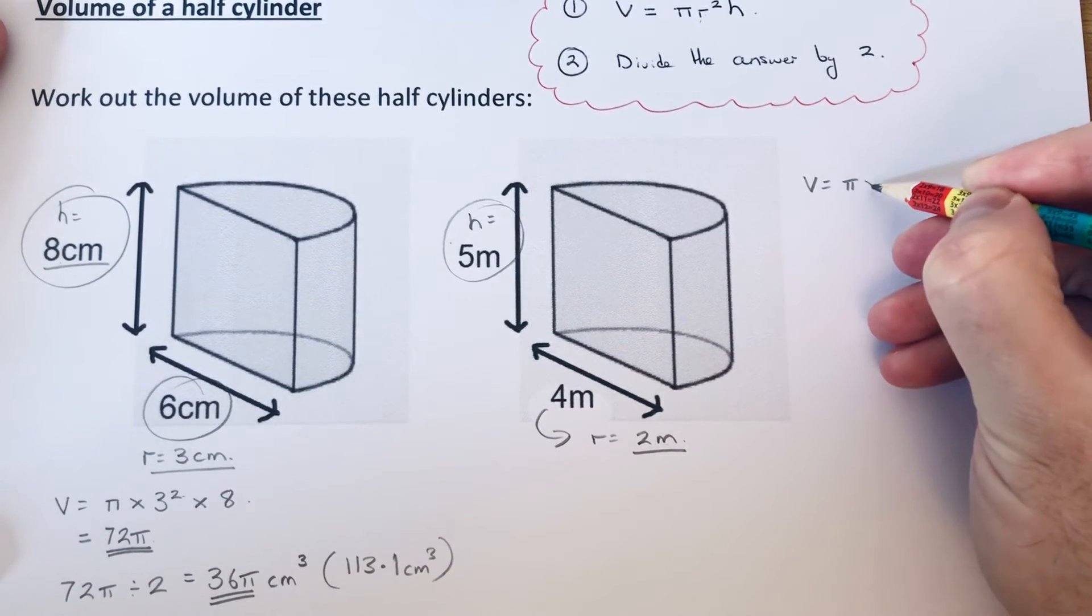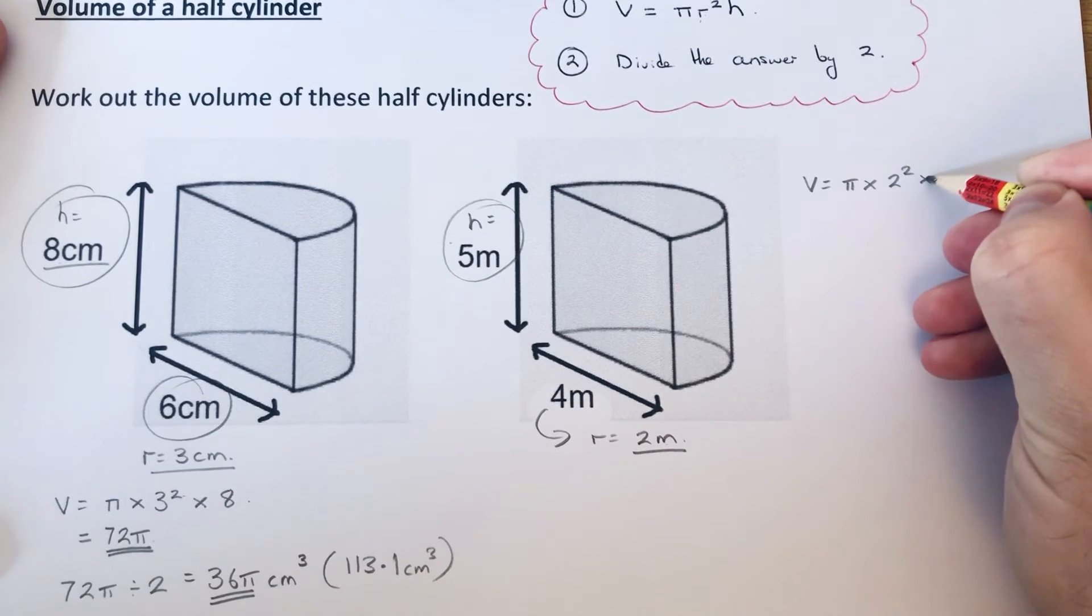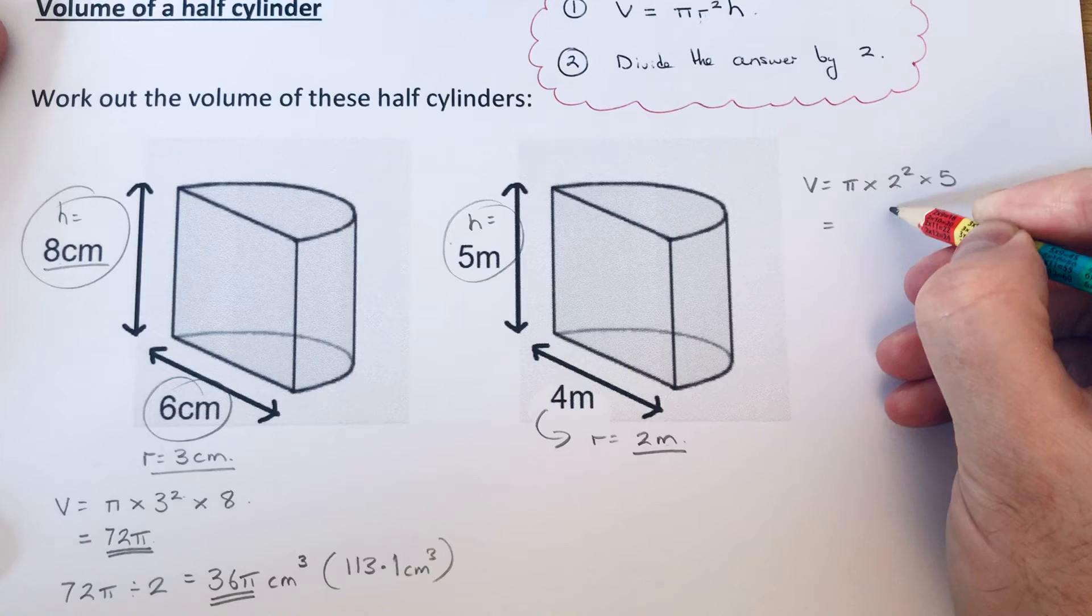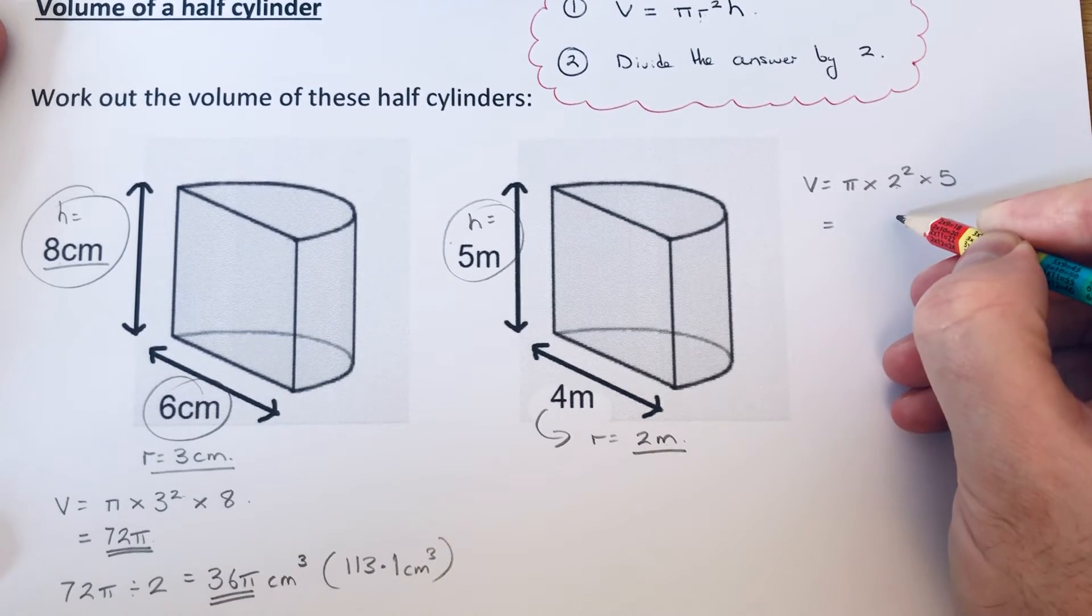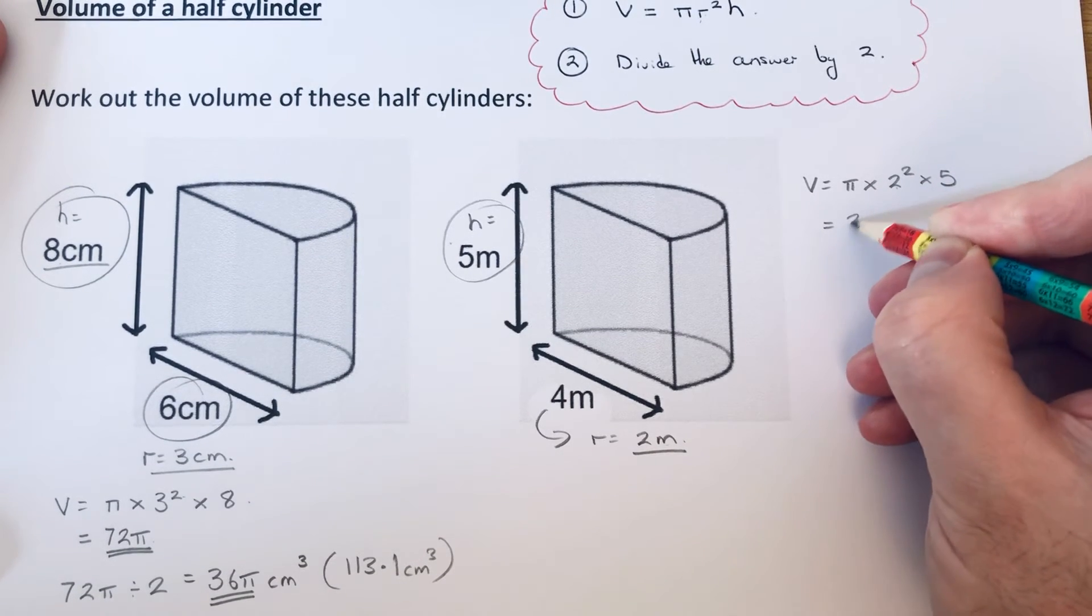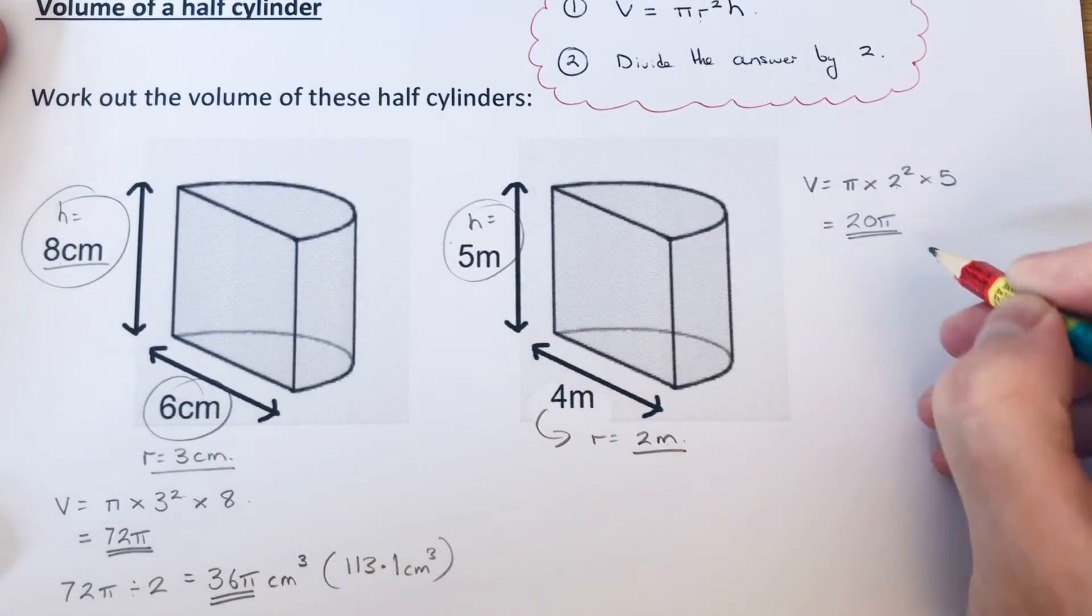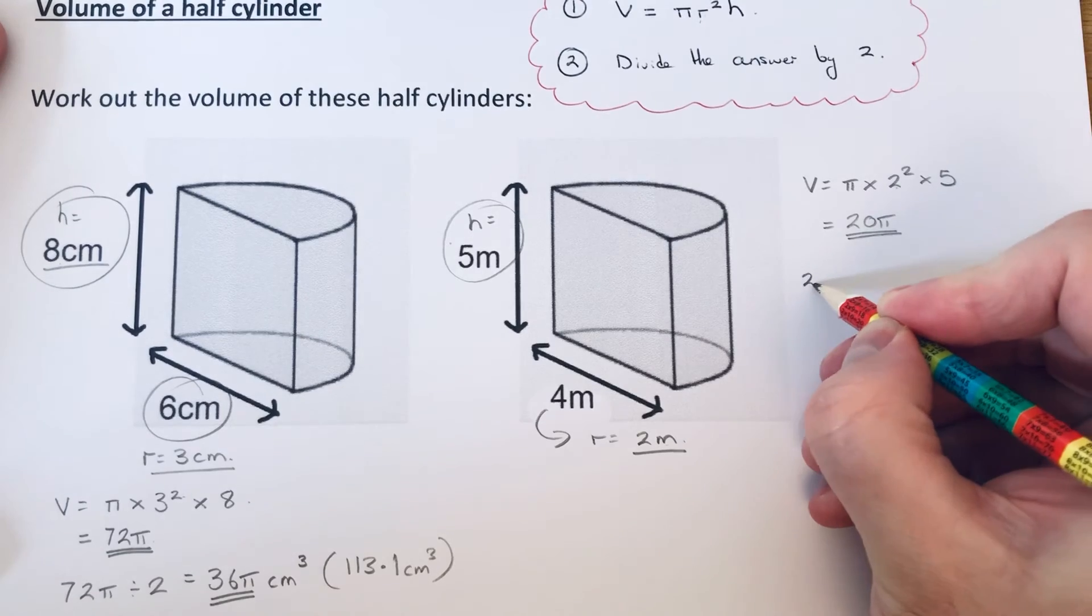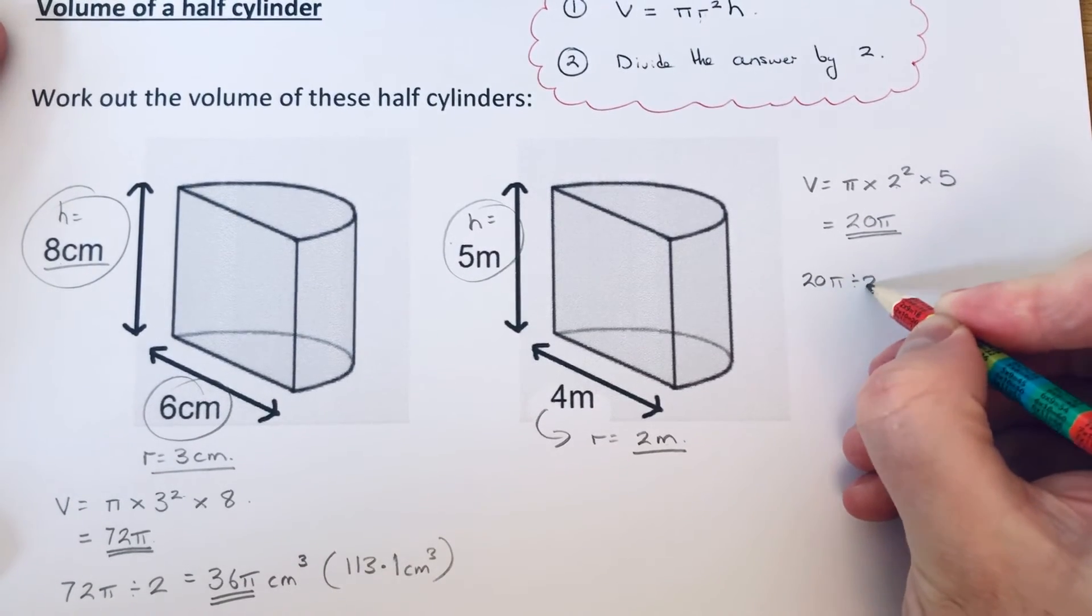So it would be π × 2² × 5. 2 squared is 4, 4 × 5 is 20, so the volume of our full cylinder is 20π. To get the volume of our half cylinder, we divide that answer by 2.